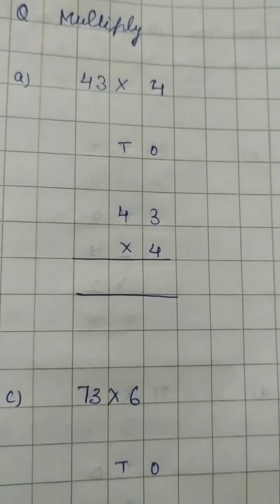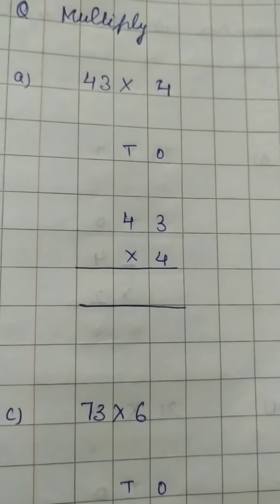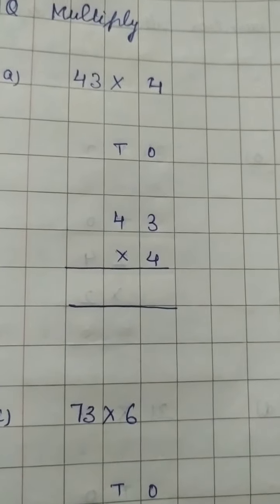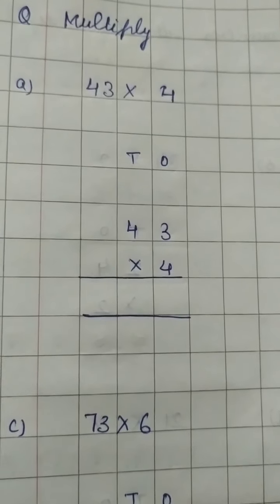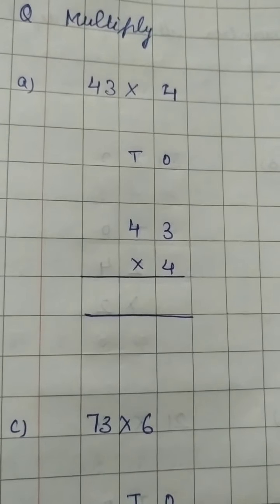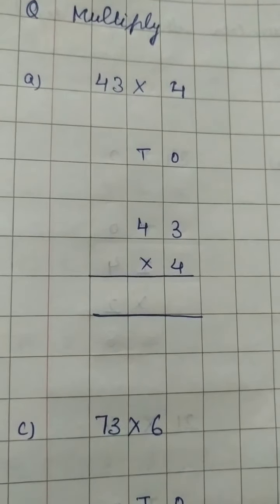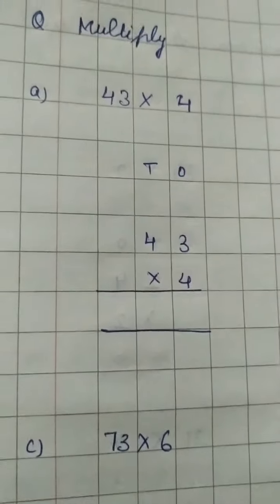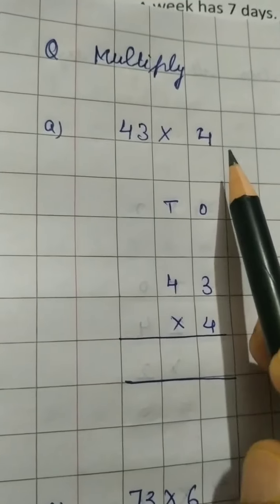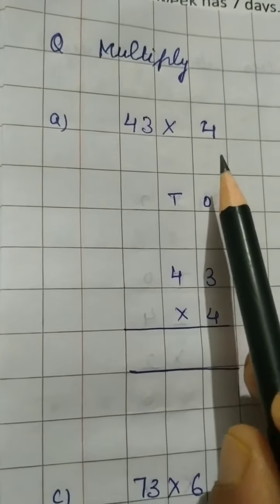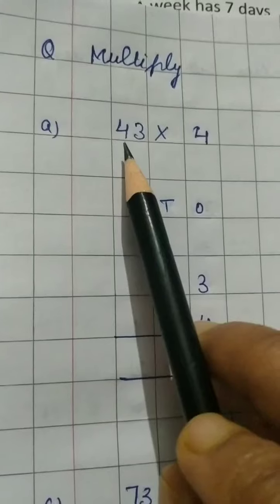Hello students, we are doing Chapter 4: Multiplication. In this video we will do multiplication of a two-digit number with a single-digit number with carry. As I told you last time, here the question is 43 multiplied by 4.